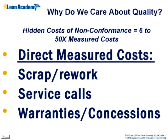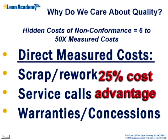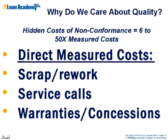Typically you can have 10% scrap and 15% rework — that's 25% of product cost. The reason Detroit can't compete with Honda, Nissan, and Toyota is that we have very high rates of this in the U.S. They can get a 25% cost advantage just by getting perfect quality. Lexus: the relentless pursuit of perfection — that's roughly a 20-25% cost advantage, helping deliver a competitive product.